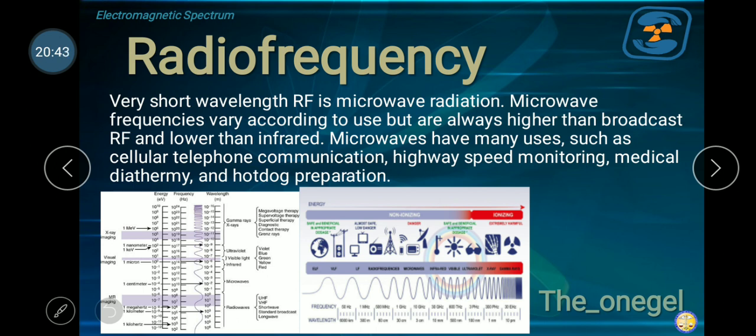I don't know what is the radio frequency of our local radio station here. You notice radio frequencies like 95.5 or 92.7. Those are applied to Congress and approved by congressmen so that is your identity. It cannot be taken by others. It's in the law, your radio frequency usage. That is why ABS-CBN became controversial. Very short wavelength radio frequency is microwave radiation. Microwave frequencies vary according to use but are always higher than broadcast radio frequency and lower than infrared. Microwave have many usages: cellular telephone, that's important. Without microwave, it's difficult for us to communicate. High-speed monitoring, medical diathermy, and hotdog preparation.